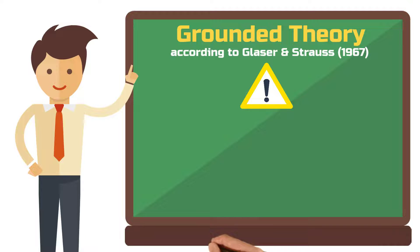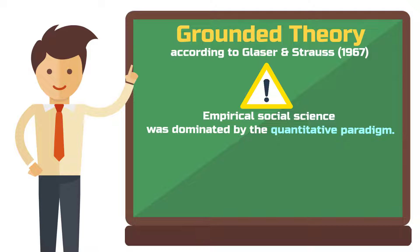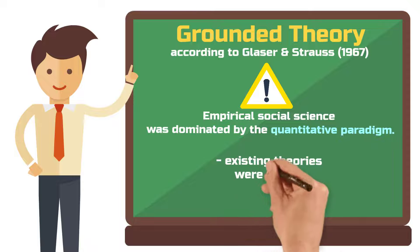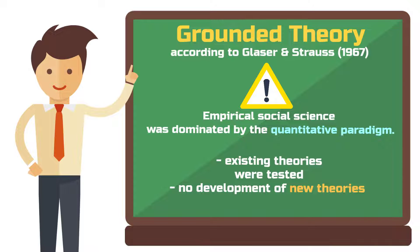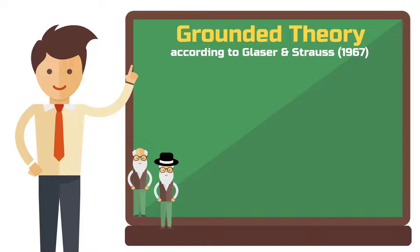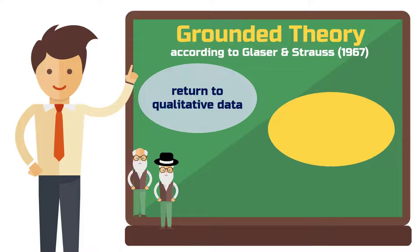The authors Barney Glaser and Anselm Strauss were two American sociologists who addressed an important research problem in their work. The problem was that empirical social science was dominated by the quantitative paradigm at the time. Researchers were trained solely to test the existing major sociological theories. However, this posed a problem — why assume that these theories could explain everything? Wouldn't it be more appropriate to also develop new theories? In their book, Glaser and Strauss propose a return to qualitative data and systematically derive new sociological theories based on the behavior of individuals and groups.